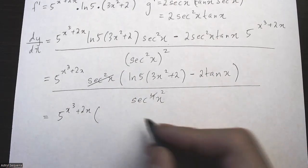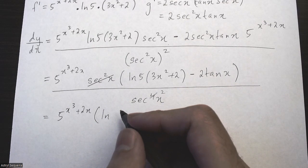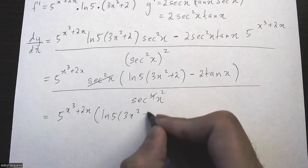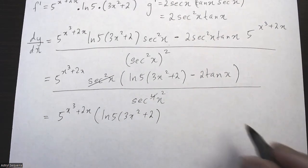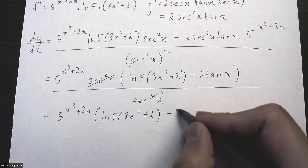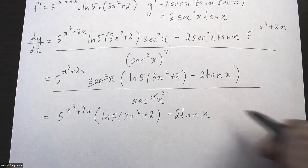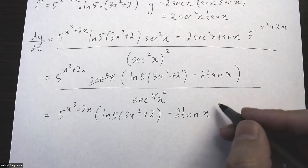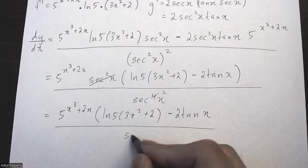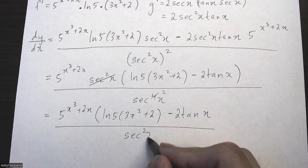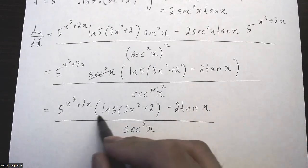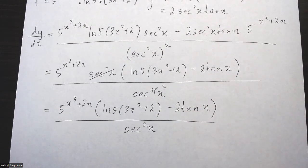So my final solution for this question is 5 to the x cubed plus 2x, times (ln 5 times (3x squared plus 2) minus 2 tan x), all divided by sec squared x.